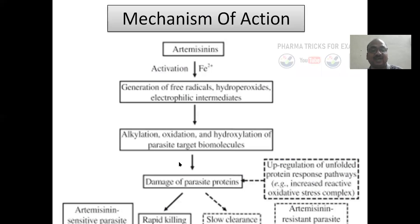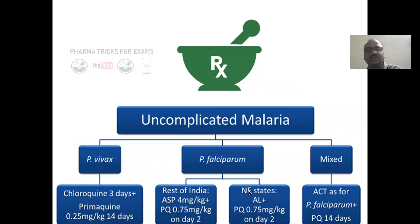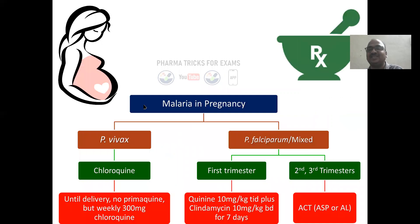Mechanism of action of artemisinin: it damages parasite proteins. Artemisinin-resistant parasites show slow clearance. For treatment of uncomplicated malaria: Plasmodium vivax, Plasmodium falciparum, and mixed infections each have specific treatment schedules. For severe malaria and malaria in pregnancy, there are also designated treatment schedules. That concludes this session on anti-malarial drugs.